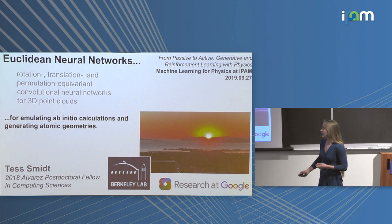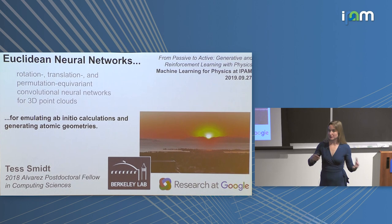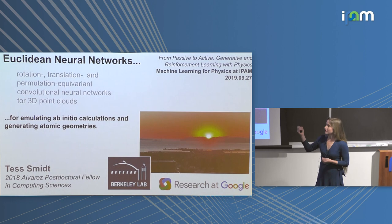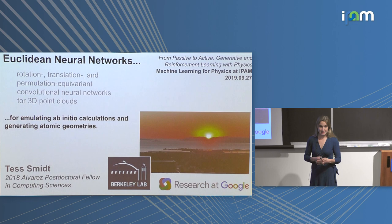The work I'm going to talk about today was done towards the end of my PhD and into my postdoc — while I was a grad student at UC Berkeley as well as an intern on the Google Accelerated Science team. Specifically we're talking about how do these networks work, why did we make them, and how can we use them to do things like expensive quantum mechanical calculations of atomic structures.